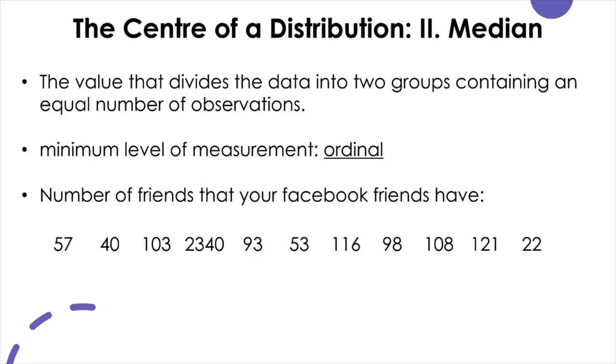Another central tendency measure is median, which literally means the middle score. By definition, median is the value that divides the data into two groups containing an equal number of observations. Because you need to be able to rank order between the values to calculate the median, you can only calculate this quantity for the ordinal or above levels of measurement. You cannot calculate median for the nominal level of data.